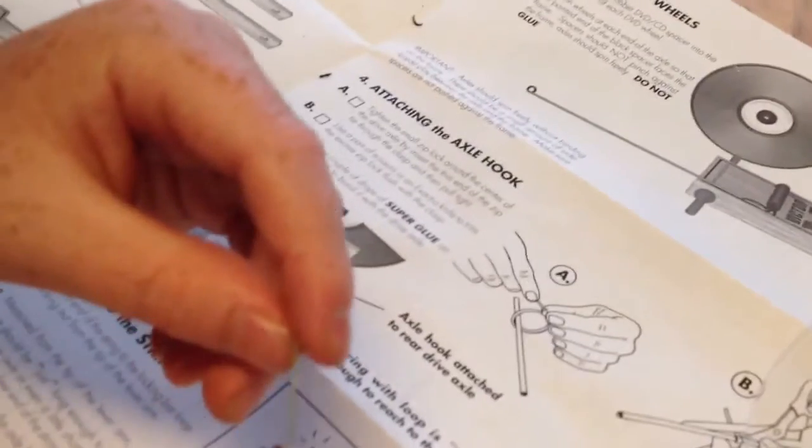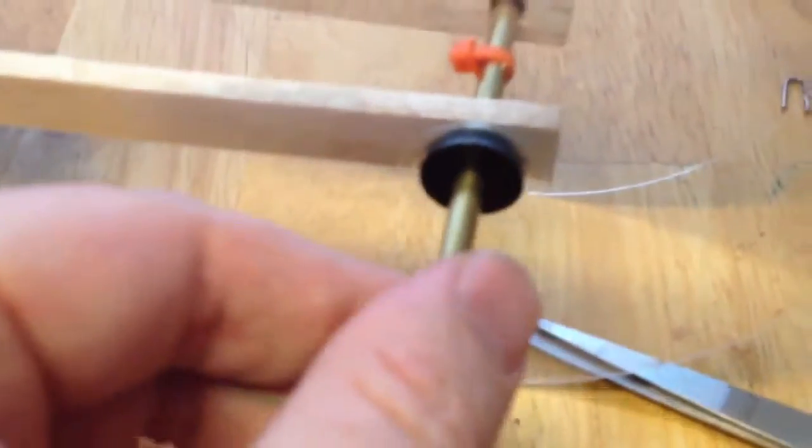And down this end, this attaches to this axle hook. Now, this string isn't the easiest to work with. It's not your regular string. It's a, I think it says it's a Kevlar string.